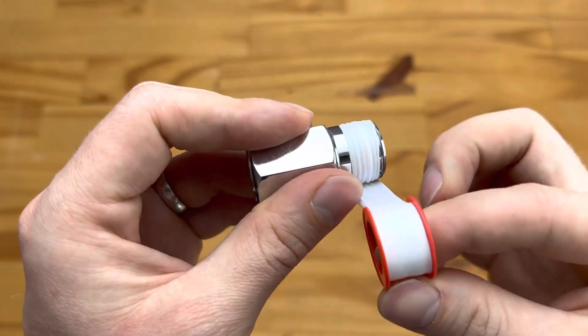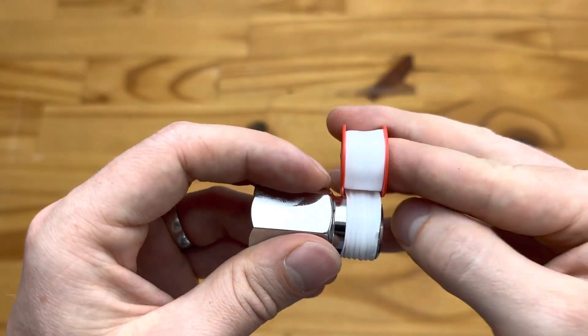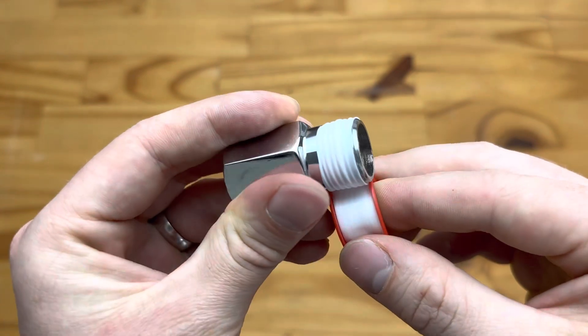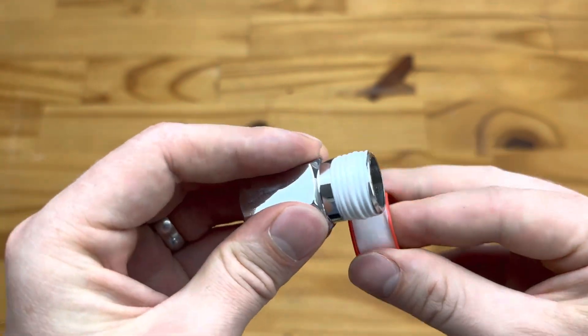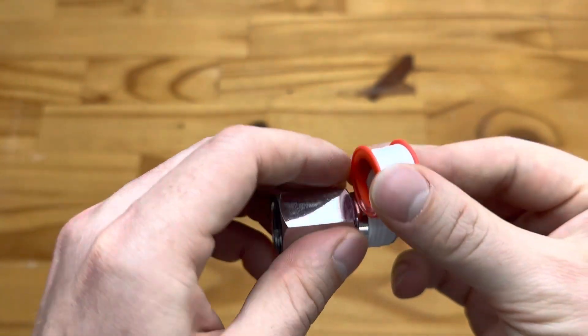What this does is allow the thread tape to tighten as you tighten the screw and it doesn't unroll as you tighten it. So I'll demonstrate. Let's break this off.